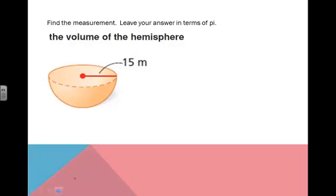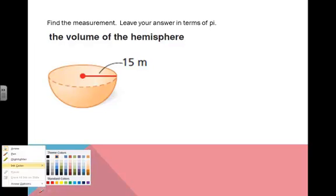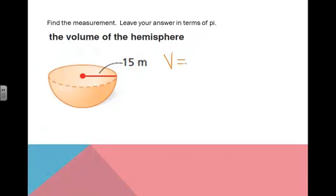For this one, we're finding the measurement. Again, leaving our answers in terms of pi. We've got to find the volume of the hemisphere. So we only want half of the volume. I want half of the volume, which is 4/3πr³. If we were to reduce this fraction, this would be 2/3πr³.